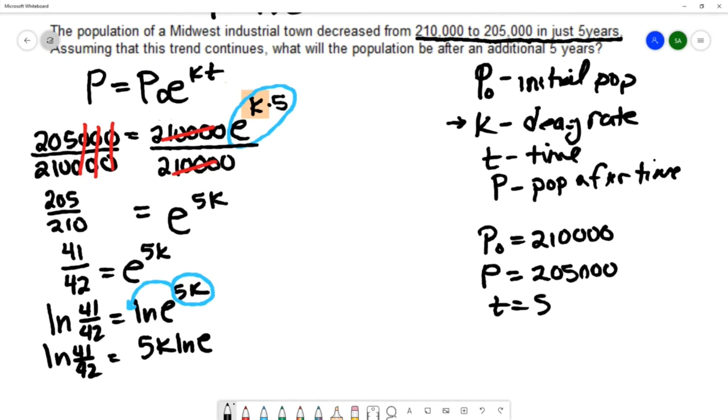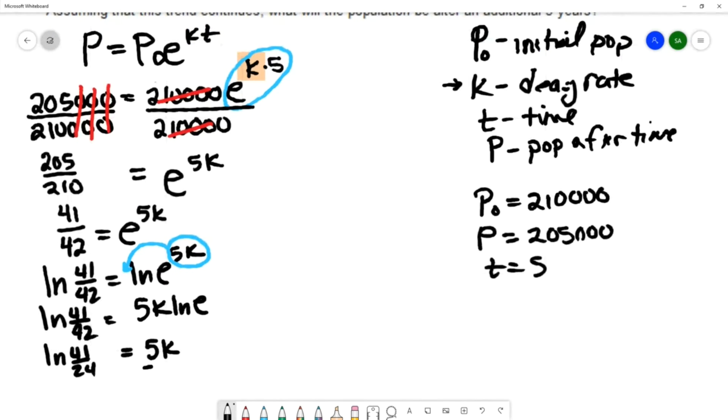Natural log of e is 1, so this becomes 5k. Then I can divide both sides by 5, and I have k being natural log of 41 over 42 divided by 5.